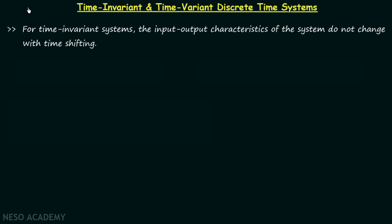Till now we have completed static, dynamic, causal, and non-causal discrete time systems. In this lecture we will understand how to find out if the given discrete time system is a time invariant system or a time variant system.